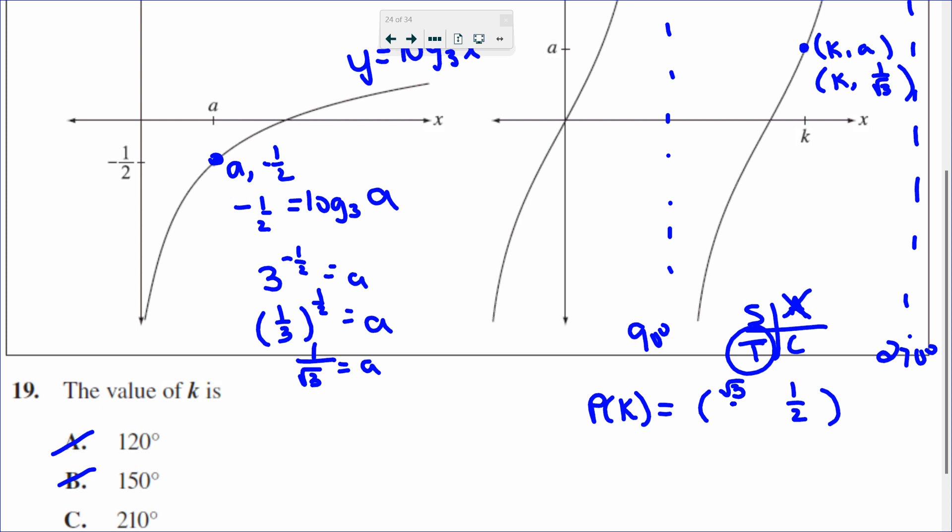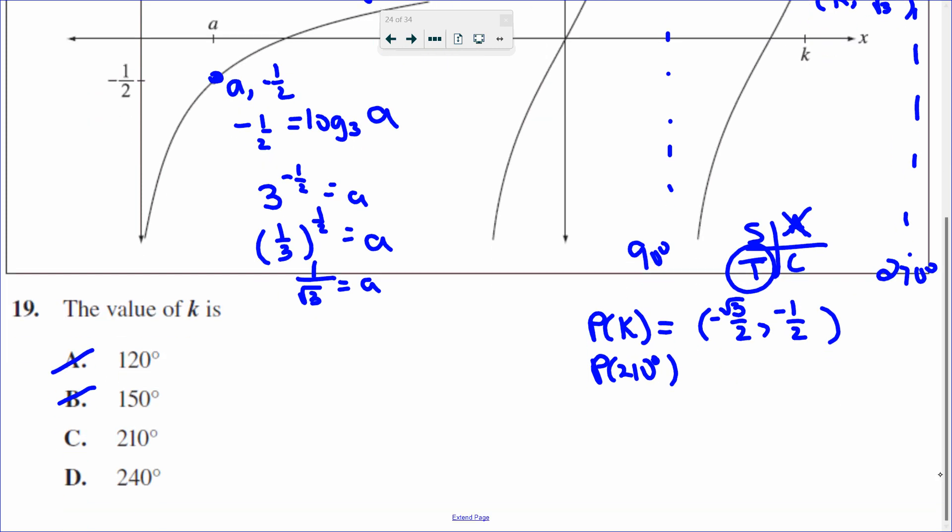So I know that the coordinate looks like this, but in quadrant three, both are negative. So this is the point on the unit circle that I am looking for. So I know that the value of K having a reference angle of 30 degrees is 180 plus 30 degrees. The point on the unit circle I'm looking for is 210. So I now know that K is 210. The answer is C.